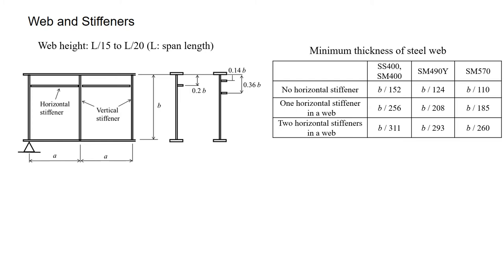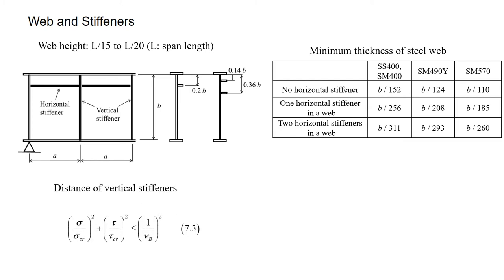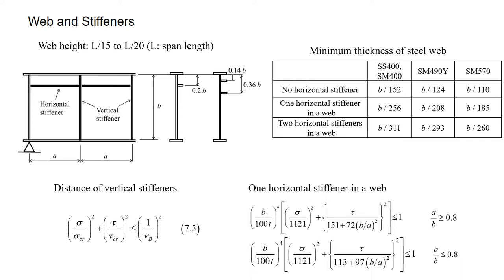Vertical and horizontal stiffeners are welded to the web to prevent shear buckling. The interval — distance of vertical stiffeners — must satisfy equation 7.3. This gives equations for one horizontal stiffener, depending on the aspect ratio A over B.